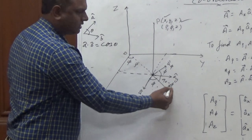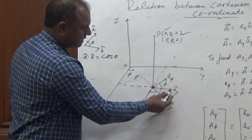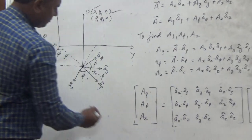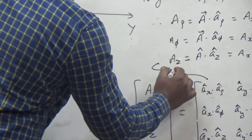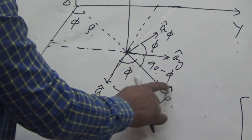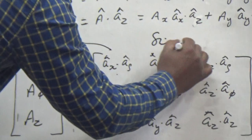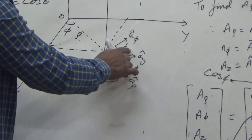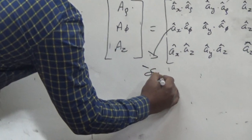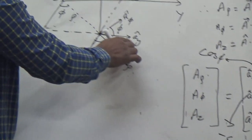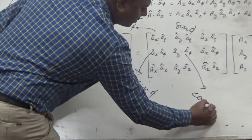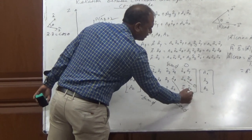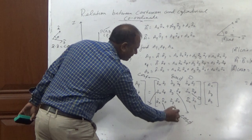The angle between AY and A-rho is 90 minus phi. AX dot A-rho: the angle is phi, so this gives cos(phi). AY dot A-rho: the angle is 90 minus phi, so cos(90 - phi) equals sin(phi). AX dot A-phi: the angle is 90 plus phi, so this gives minus sin(phi). AY dot A-phi: the angle is phi, so this gives cos(phi). AZ and A-rho are perpendicular, giving 0. AZ and A-phi are perpendicular, giving 0.